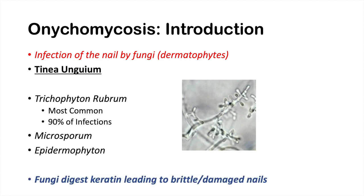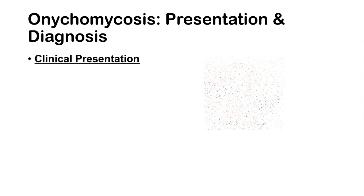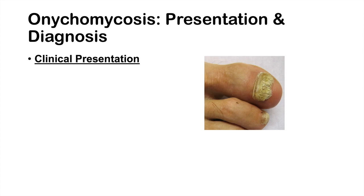The fungi cause this nail infection by digesting the keratin of the nail, leading to brittle and damaged nails. An onychomycotic nail presents as a brittle, crumbling, and yellow discolored nail.